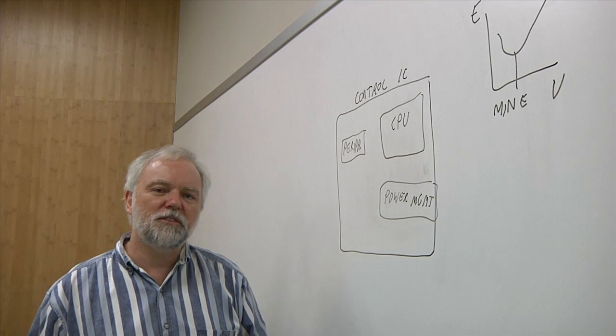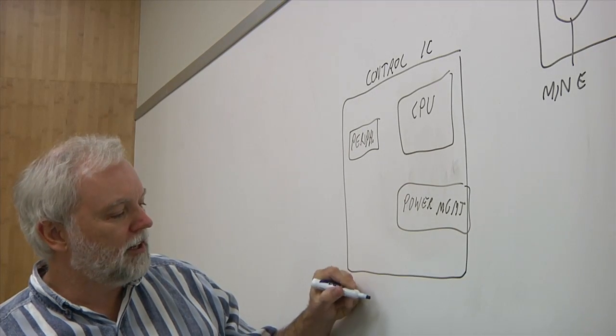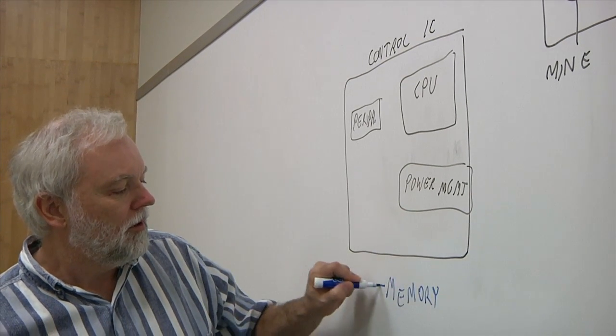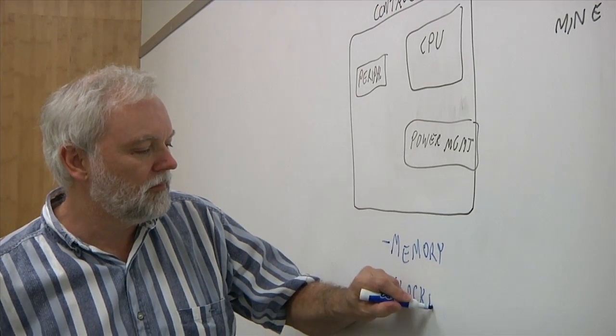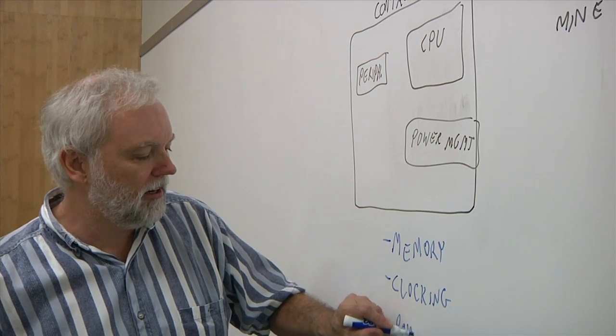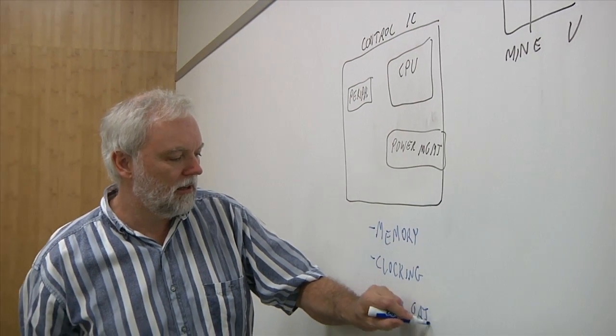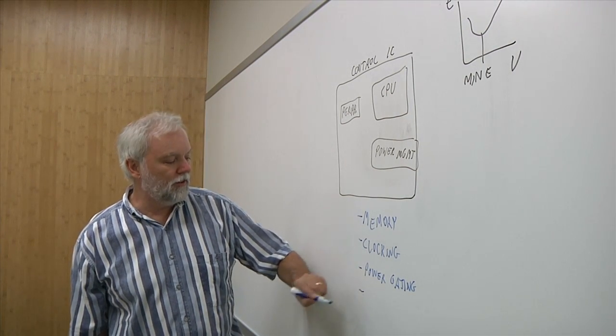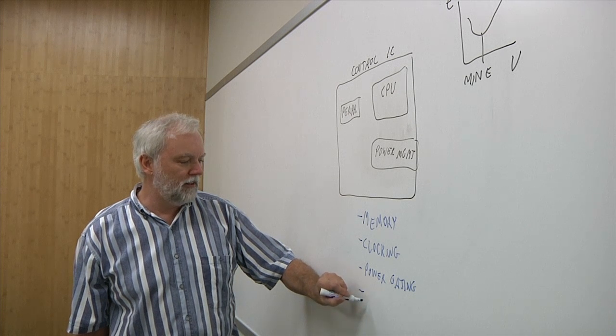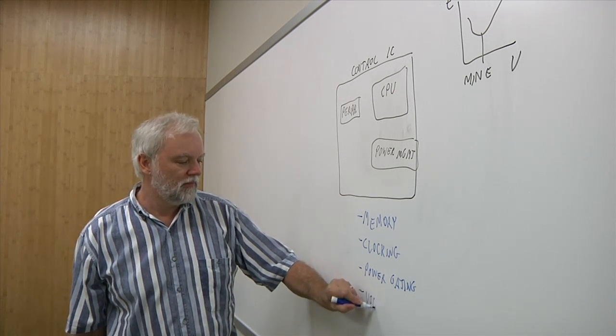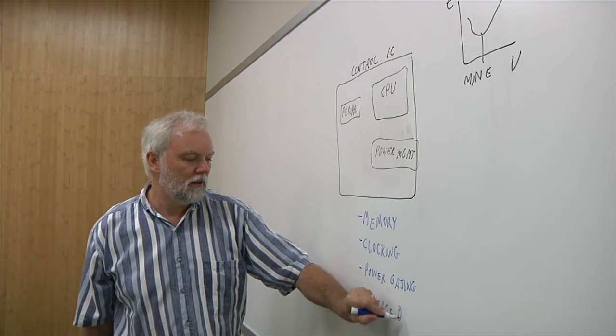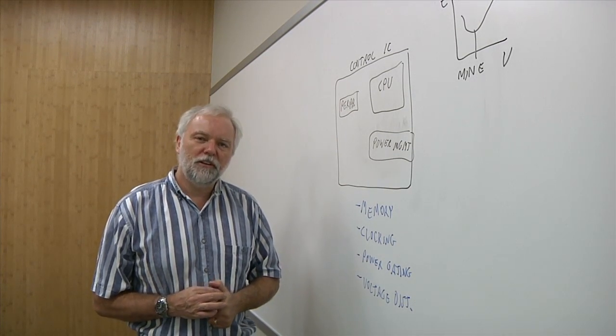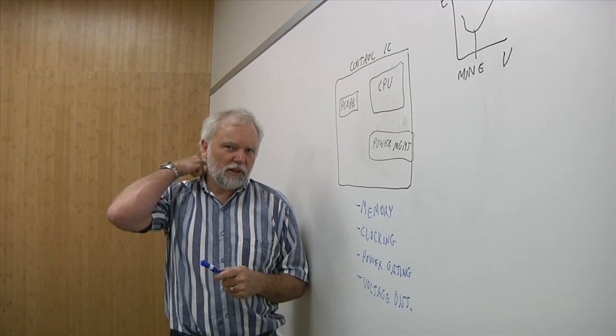There's a couple of key pieces to it that we're really going to have to think about. We need to think about the memories, the clocking, the power gating, and then the last one is essentially the voltage distribution. So once we've made the decision to operate at a near-threshold type voltage, the very first thing that we need to think about is the memory.